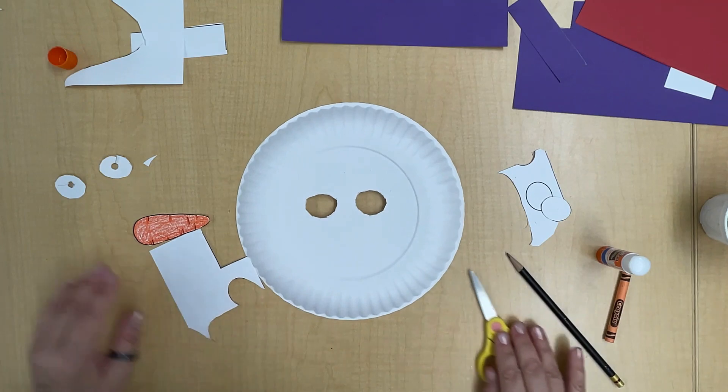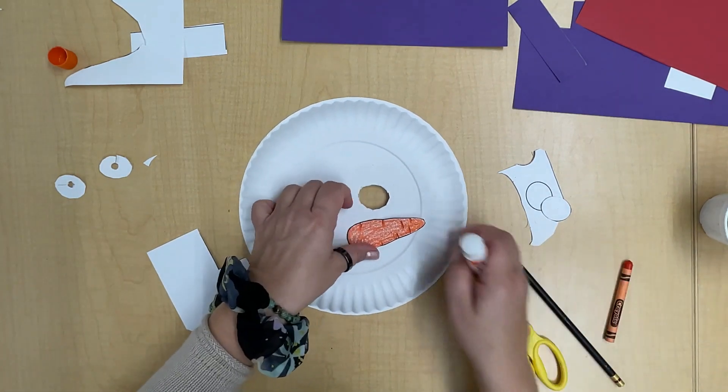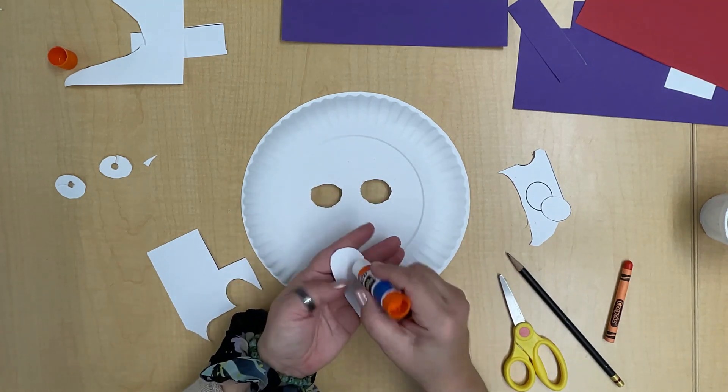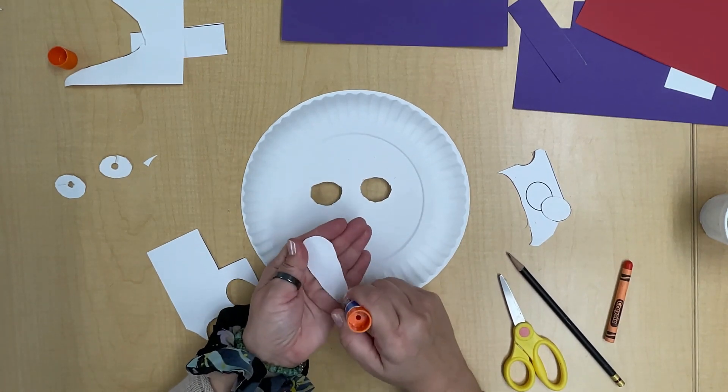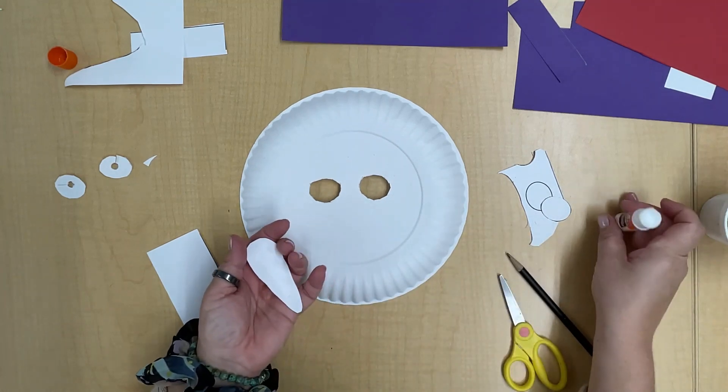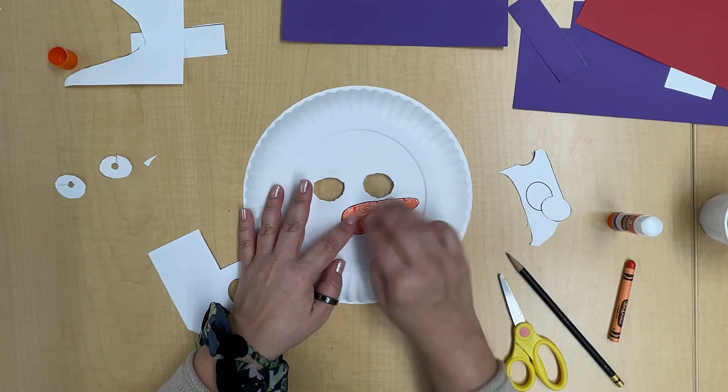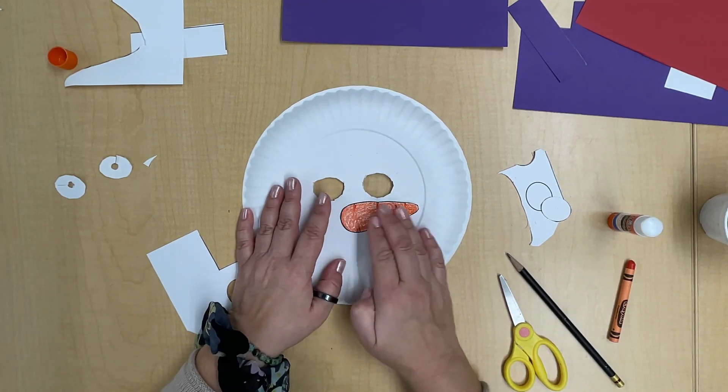There are your two eyes. Now you can put your nose on. I'm going to turn over the carrot and glue it on. If you prefer, you can draw and design your own snow person nose and mouth.